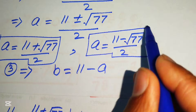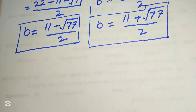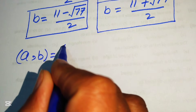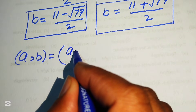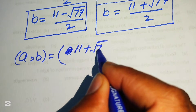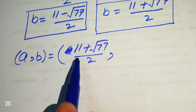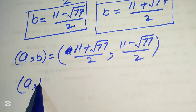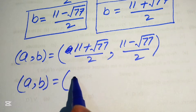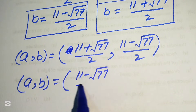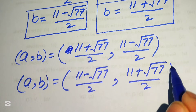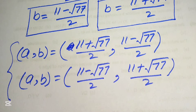So finally we have two solution sets. The first solution set is: a equals to 11 plus square root of 77 divided by 2, and the corresponding b equals to 11 minus square root of 77 divided by 2. The second solution set is: a equals to 11 minus square root of 77 divided by 2, and b equals to 11 plus square root of 77 divided by 2.